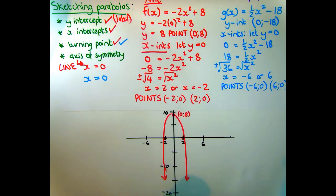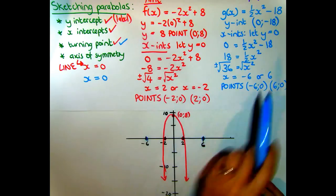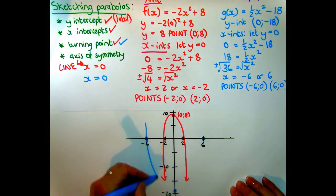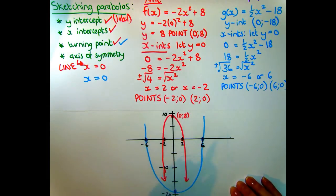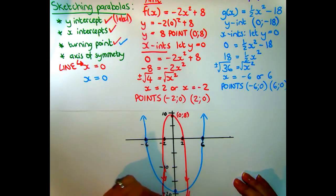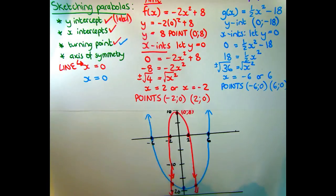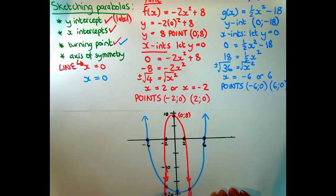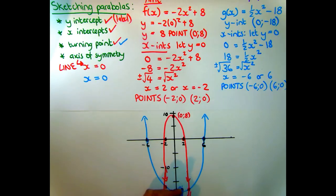The blue graph has x-intercepts at ±6, and I know it's a happy graph because its a value is positive. Its y-intercept is -18, plotted well below the x-axis. This graph is quite a lot wider. Don't forget to label the graphs, label the axes, label the scales, and label all the points. The axis of symmetry is x = 0, and both turning points are labeled — including (0, -18) for g(x).